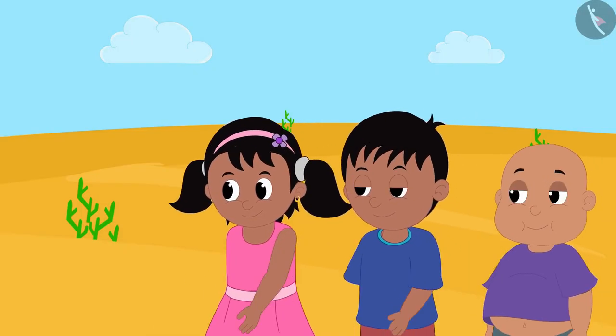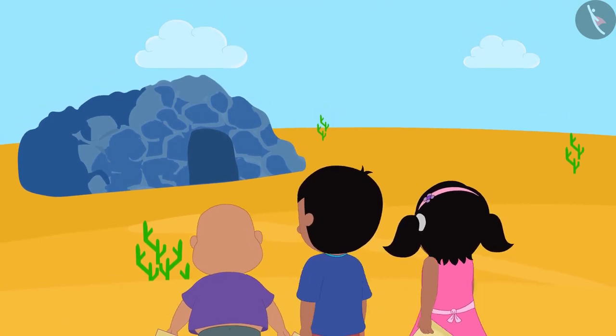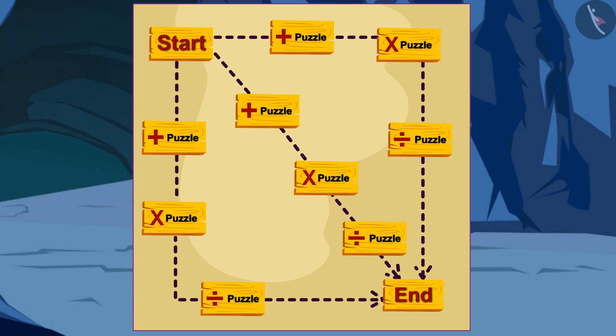Raju, Babloo, and Pinky are out in search of treasure. All three have this kind of a map and this message.